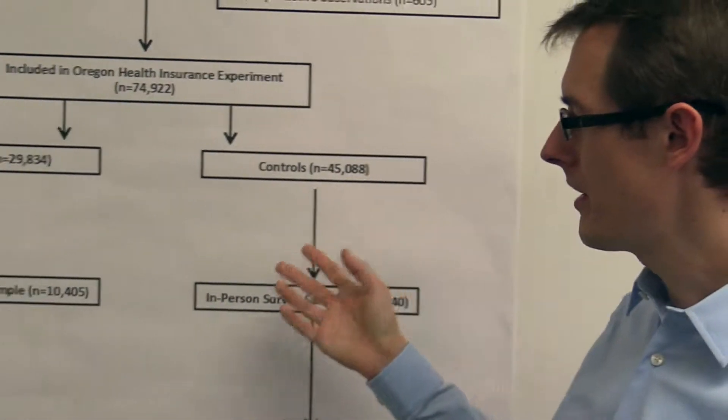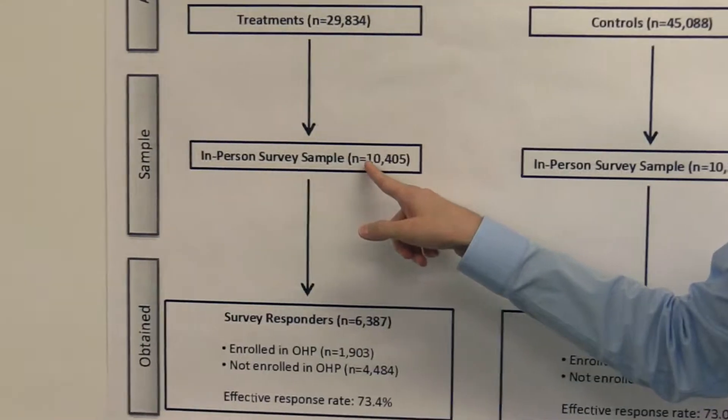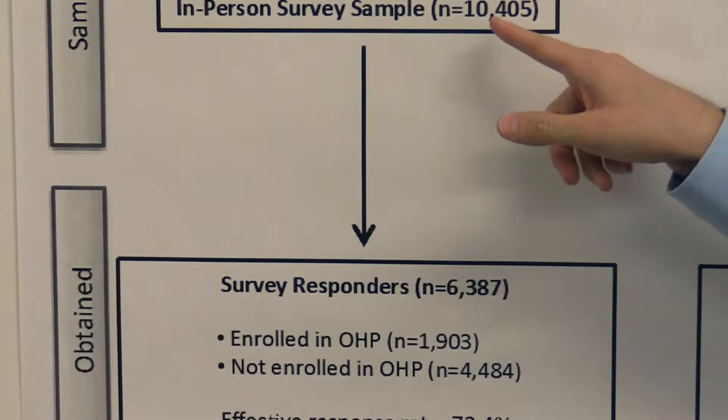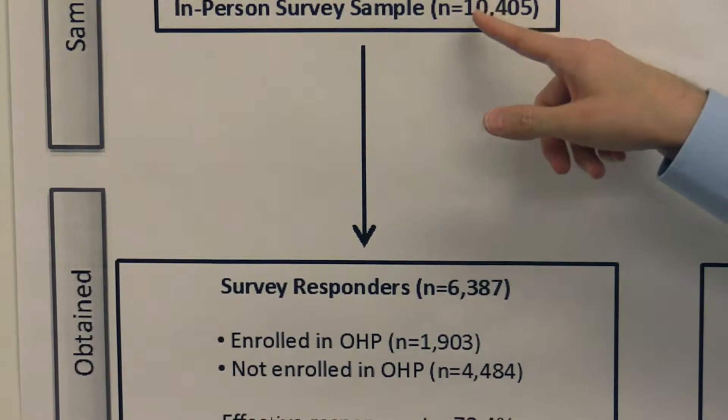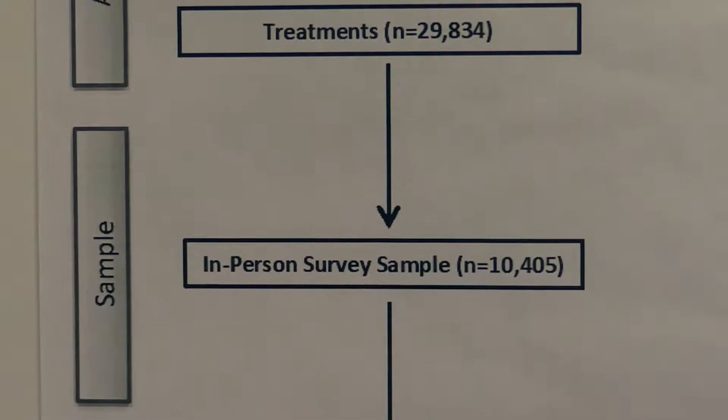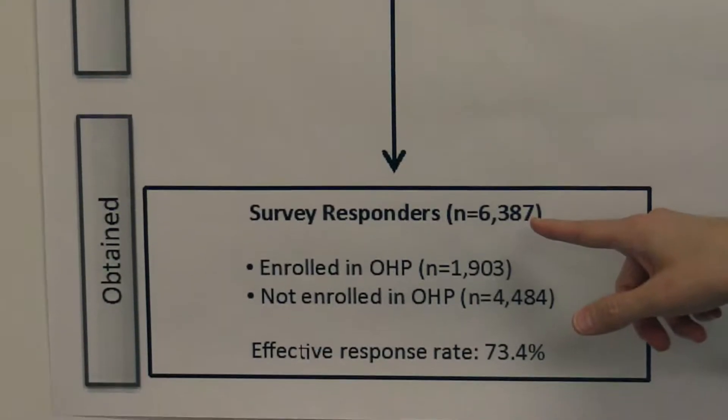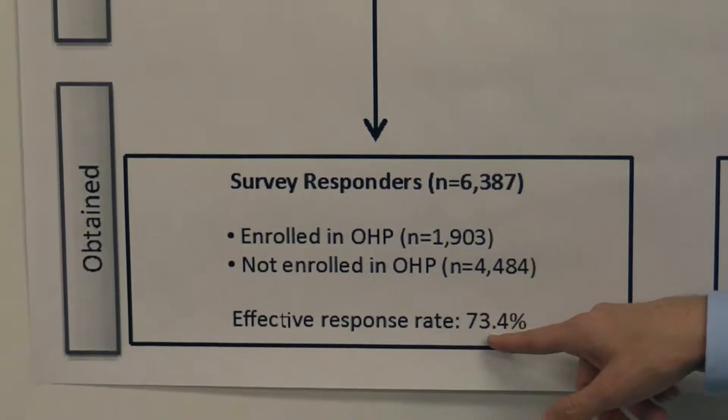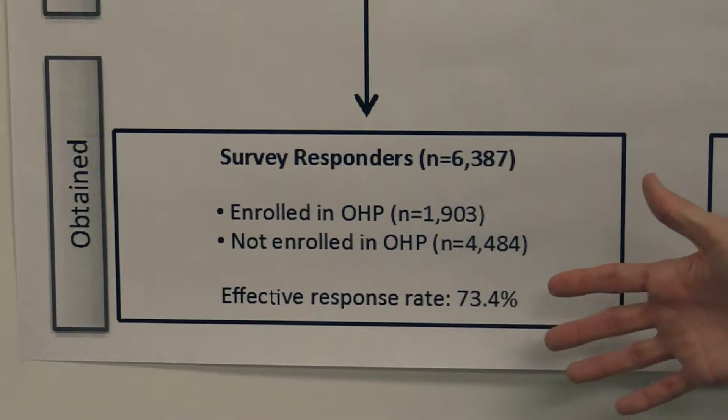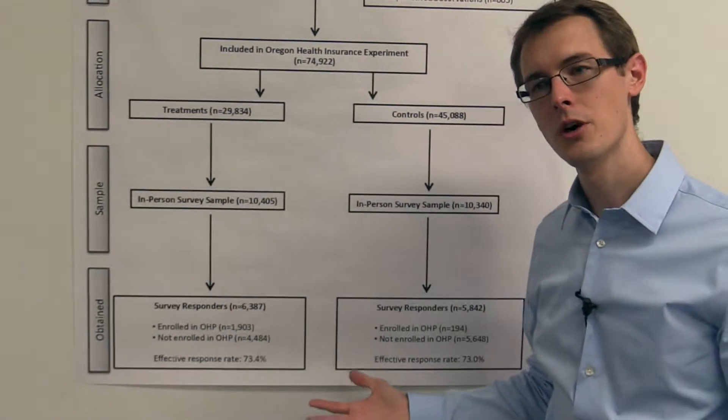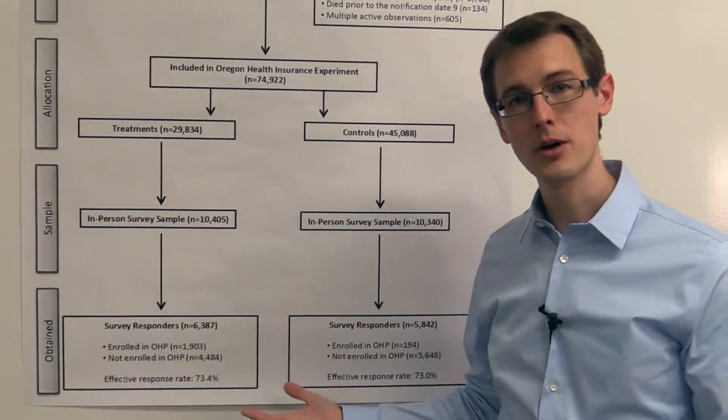So in the Oregon experiment, we saw that of the 10,400 people who were selected to gather data on, these people were randomly selected from everyone in the treatment group. Only about 6,400 actually responded to the survey. So that's about 73% of people. But about 30% of people did not respond. So that's a problem.